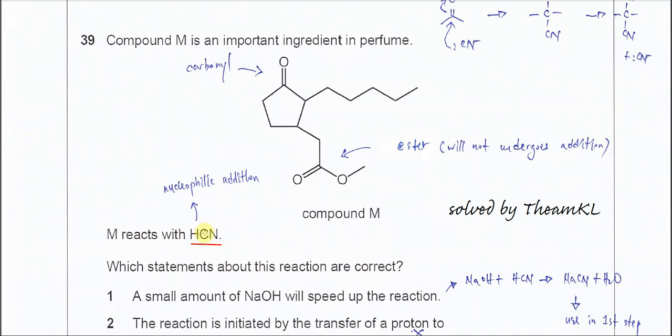When these compounds react with HCN, most likely we know it's going to undergo nucleophilic addition. We need to find the carbonyl group, which is this one. This one is an ester group, which will not undergo nucleophilic addition.